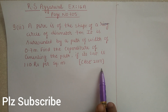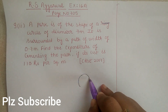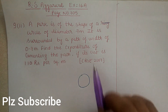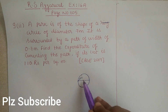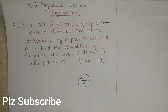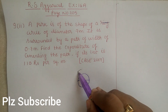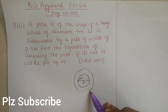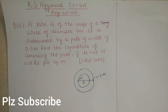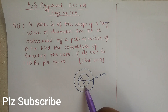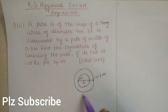So students, what is given? We are given a park in the shape of a circle. First, draw a figure. Suppose this is the park in the shape of a circle of diameter 7 meters. The diameter of the park is 7 meters. Suppose this is the center O of the circle. Now it is surrounded by a path of width 0.7 meters around the circle.